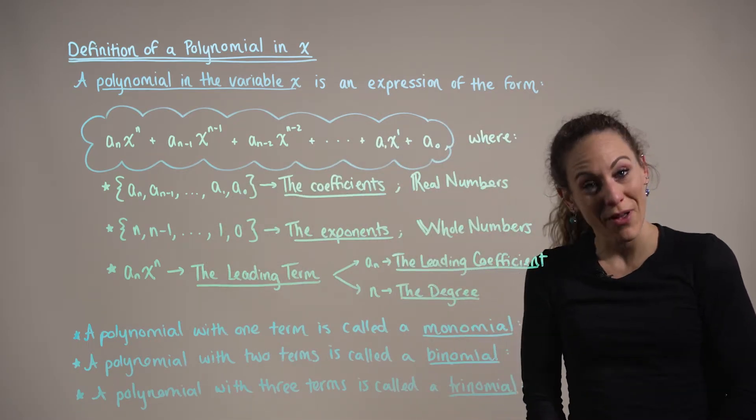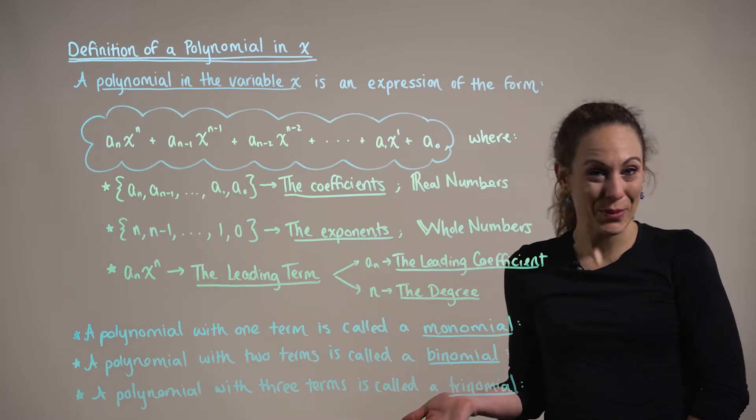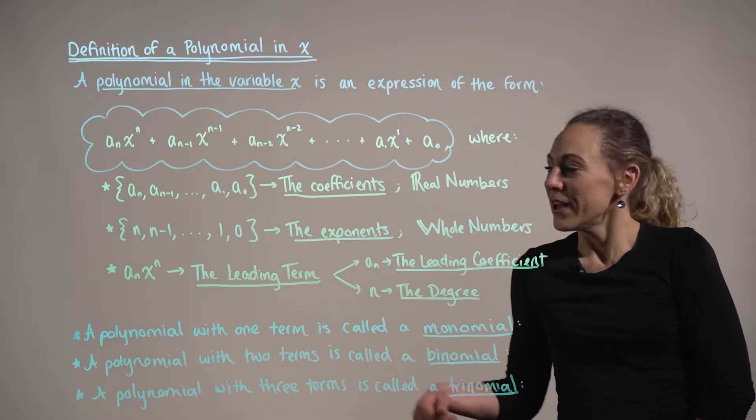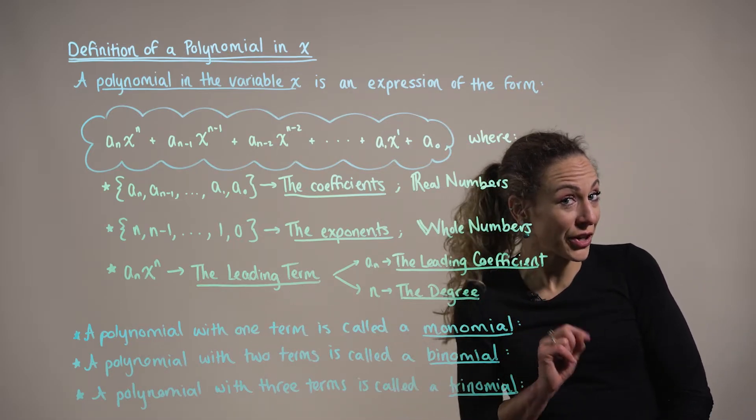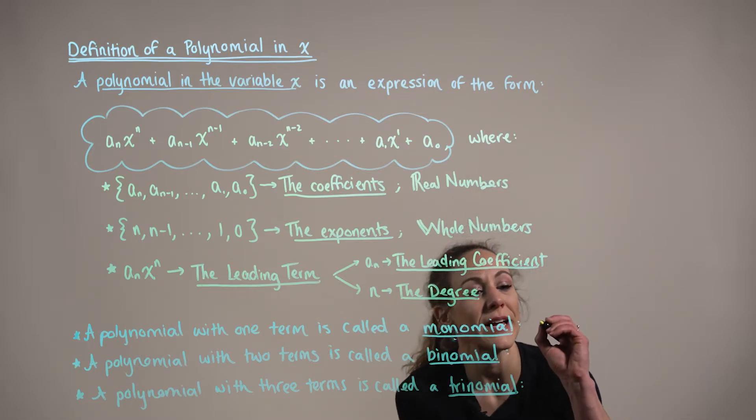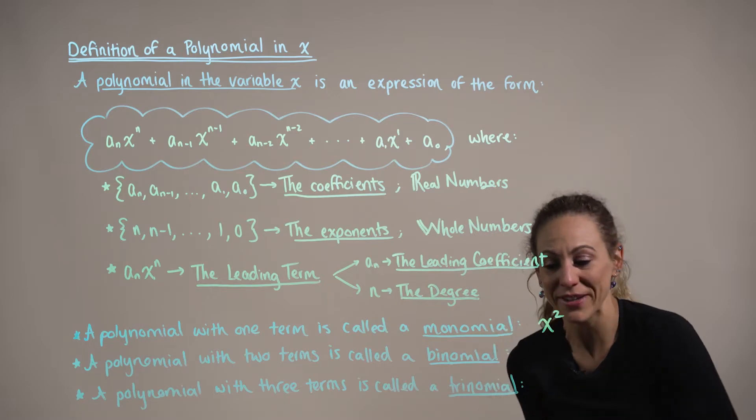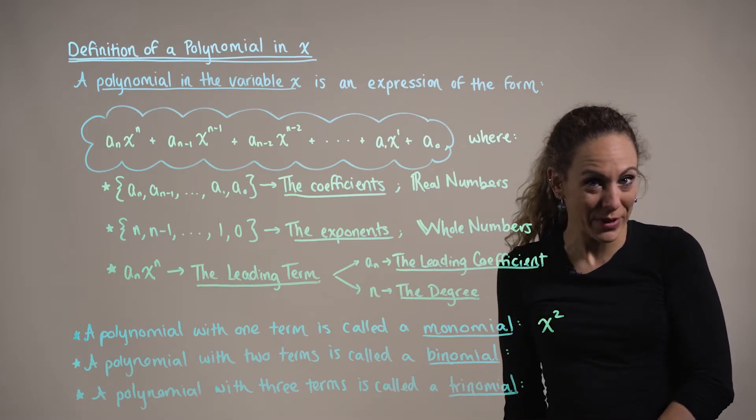While the number of terms a polynomial expression may have will vary, there are three cases we want to be on the lookout for. A polynomial with exactly one term is called a monomial, for example, something like x squared. We have one term here, so we refer to this polynomial expression as a monomial.